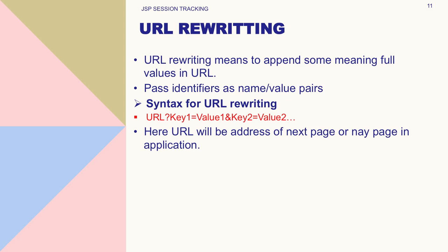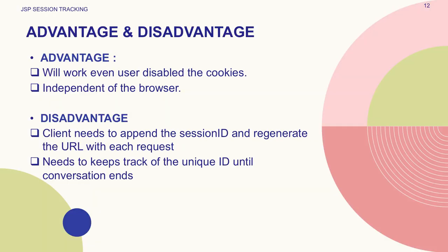Advantage of URL rewriting: the URL rewriting method is useful even if the user has disabled cookies — that was a disadvantage of cookies, so here it becomes an advantage. URL rewriting technique is also independent of the browser. Disadvantage: the client needs to append the session ID and regenerate the URL with each request, and the client needs to keep track of the unique ID until the conversation between client and server ends.